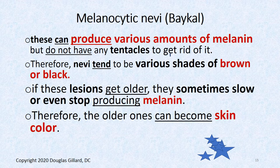Moles produce different amounts of melanin. Because they don't have dendrites or tentacles, they can't transfer melanin away, but they do produce varying amounts. Some tend to be brown, some black, and you can get a combination — so nevi can be variegated. As these nevi get older, they can slow down melanin production and become almost skin-colored.